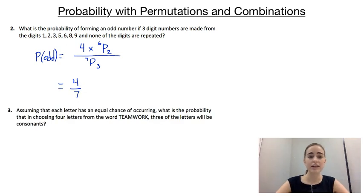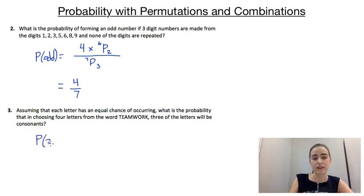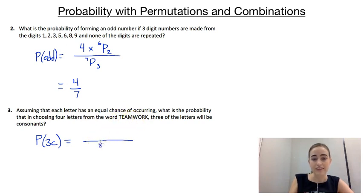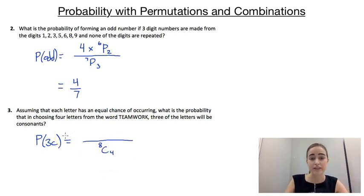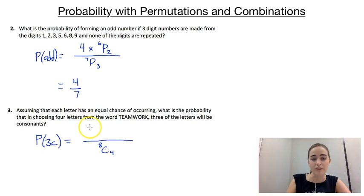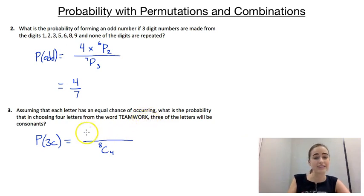Our third example says, assuming each letter has an equal chance of occurring, what is the probability that in choosing four letters from the word teamwork, three of the letters will be consonants? The word teamwork has eight letters in total, so we're choosing four from eight — that's 8C4 possible combinations. Looking at the consonants: we have T, M, W, R, and K — so that's five consonants.